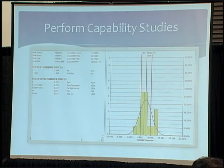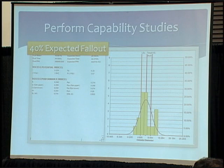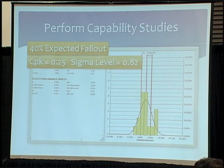Let's look at another very common tool: the histogram or capability analysis. Looking at a few stats here, I've got 40% fallout — about 20% on the low side and 20% on the high side. You can intuitively see that one side is scrap and one side is rework, but it's not really down to the hard cost. We also report numbers like CPKs and Sigma levels, but again, it's not dealing with the costs.